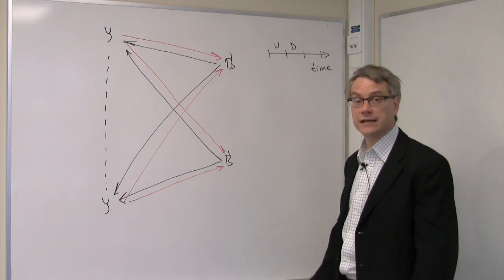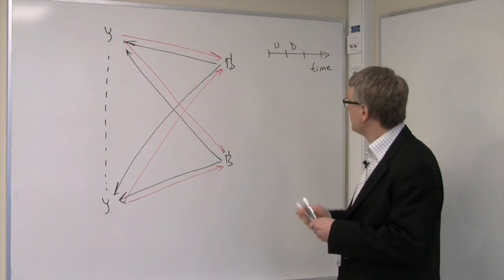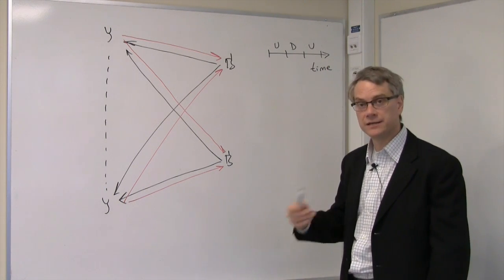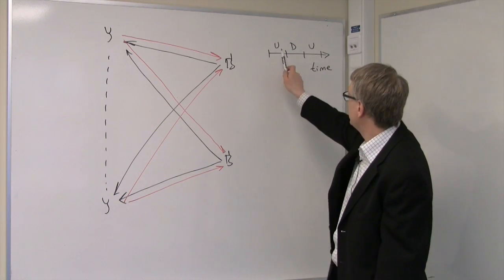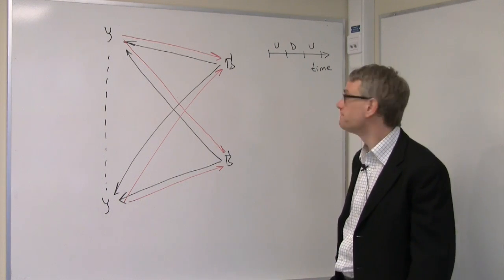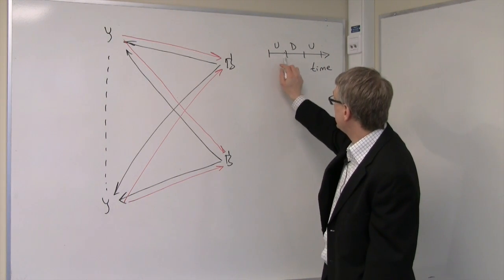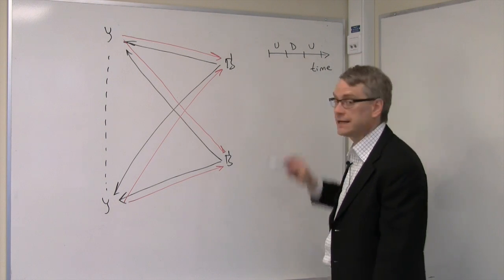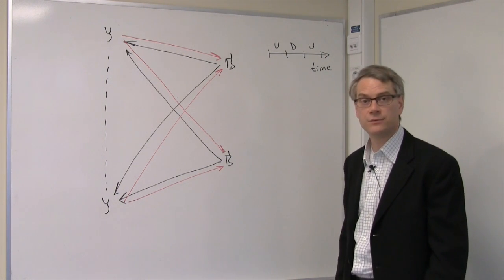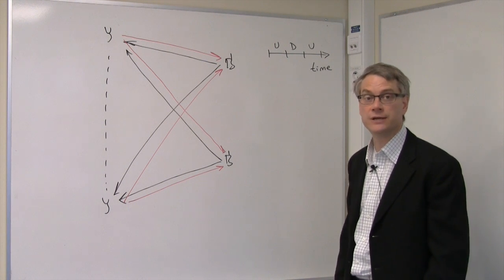And then after the downlink it's time for the uplink again. And this way it goes uplink, downlink, uplink, downlink. And the switching between uplink and downlink happens rapidly about a thousand times a second. So the time during which the uplink is active during which the downlink is active is short. It's on the order of a millisecond. Which is typically shorter than the channel coherence time.